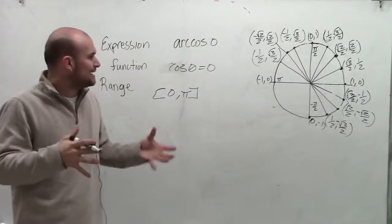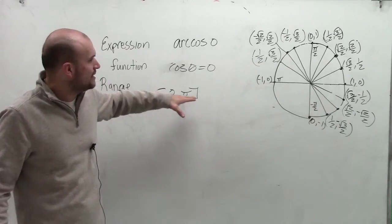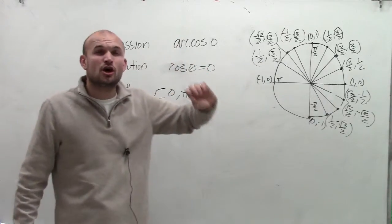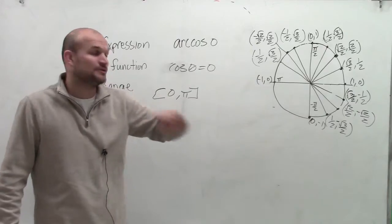So I need to determine what angle between 0 and pi, when I take the cosine of it, equals 0. Remember, the cosine deals with the x value of your function.